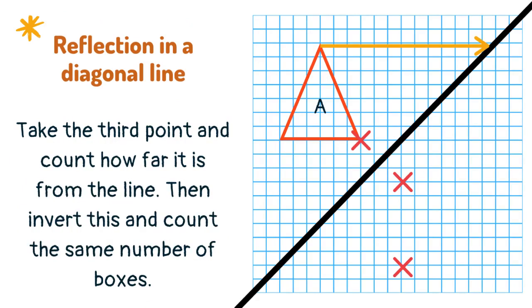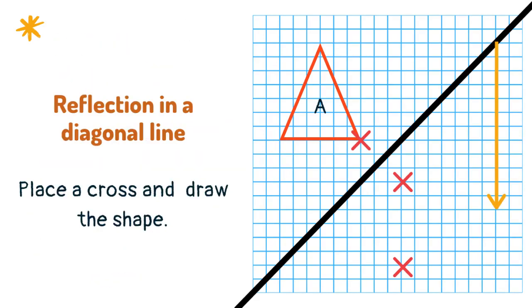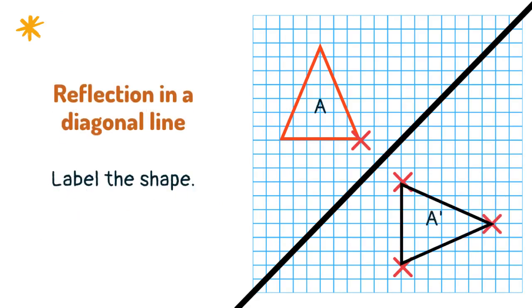Take the third point and count how far it is from the line. Then invert this and count the same number of boxes across and draw the shape. Label the shape.